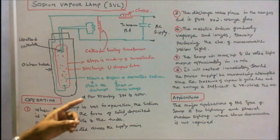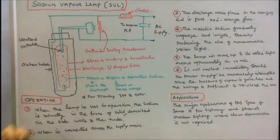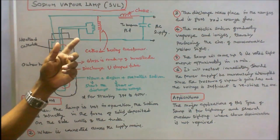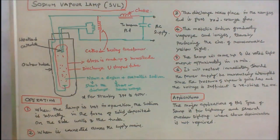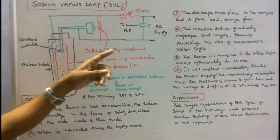For starting, the sodium vapor lamp requires 350 to 480 volts. Hence we go for a high reactance transformer or auto transformer which is used to heat the cathode. Hence it is called a cathode heating transformer.